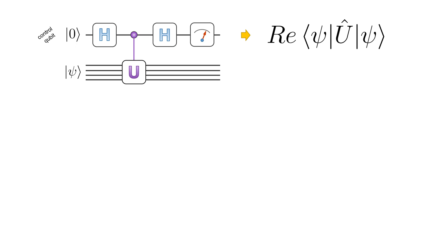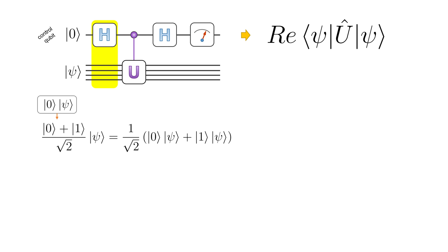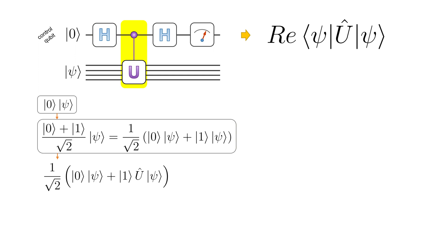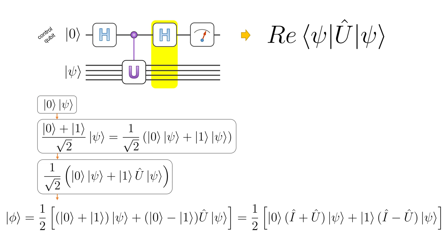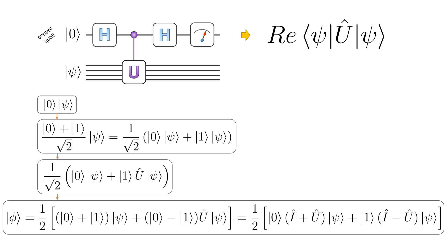Let's start with the real part. To perform the Hadamard test, we need the quantum register prepared in a state Psi and an additional qubit which will be used as a control qubit. First, we bring the system into a superposition state by applying the Hadamard gate. Then, we apply the unitary operator on the register containing Psi conditioned on the first qubit. Afterwards, we apply another Hadamard gate to the control qubit and get the final state of the system before the measurement.